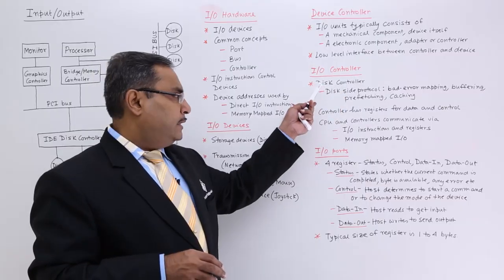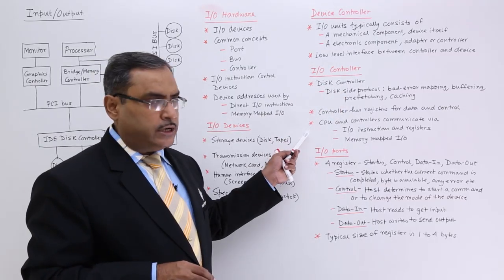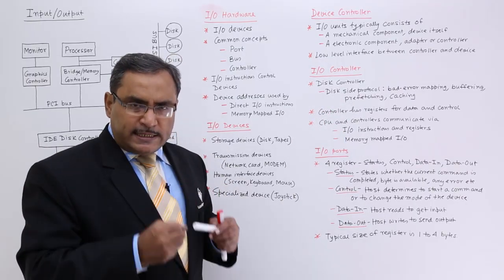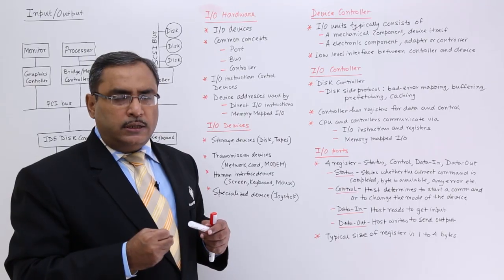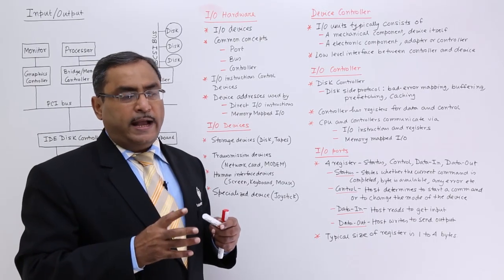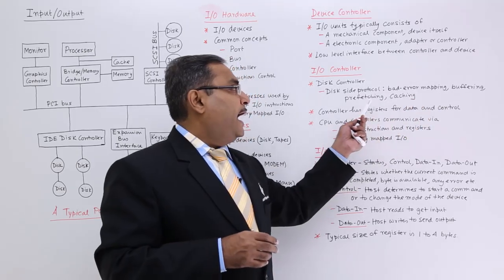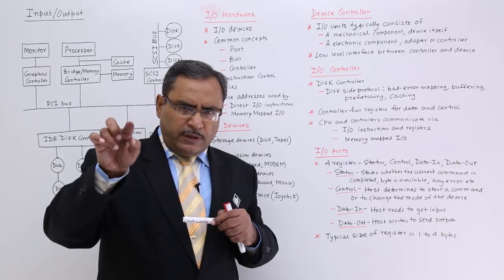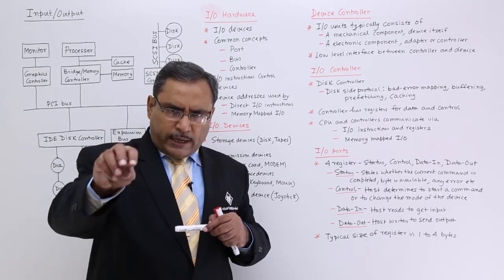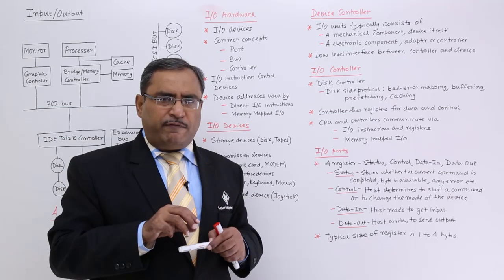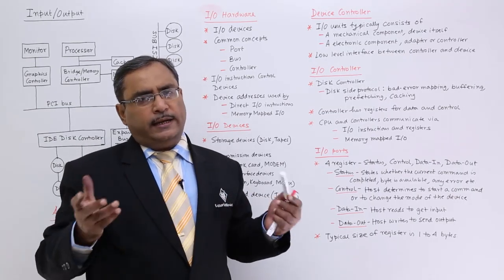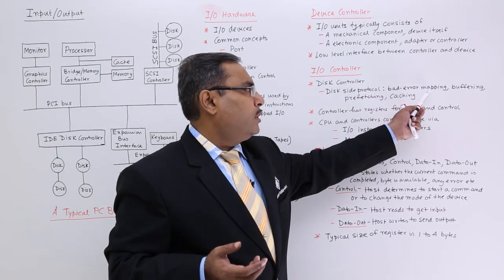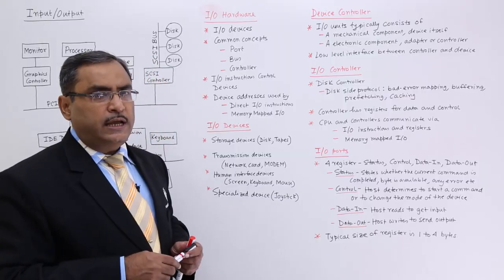The I/O controller can be categorized into three heads. One is the disk controller, which follows a disk site protocol. The disk controller can detect whether data transmission has been completed, can detect errors, can do buffering, and can do prefetching — meaning if the next data is known to be read from a specific track and sector, it can prefetch that data into the buffer so it can be supplied when required. It can also do caching.